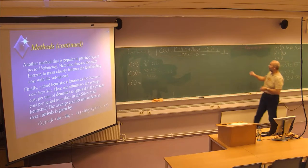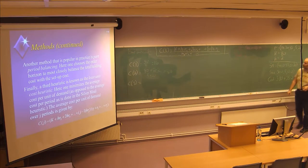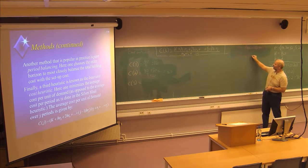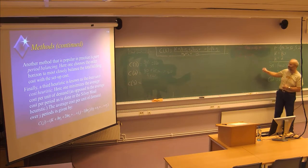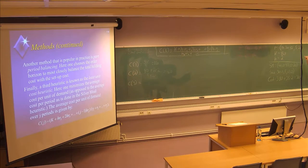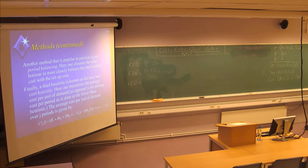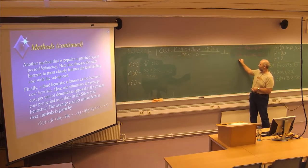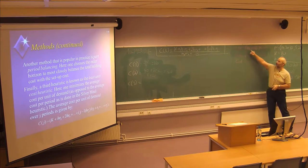So let's also look at the stock here. The stock in period one: we are producing 48, we are storing 30. Then nothing in period two — we are using the 30 we had left on stock. In period three, we are producing 42, exactly what we need. In period number four, we are producing 25, storing 20. And in period five, we don't have anything left on stock.